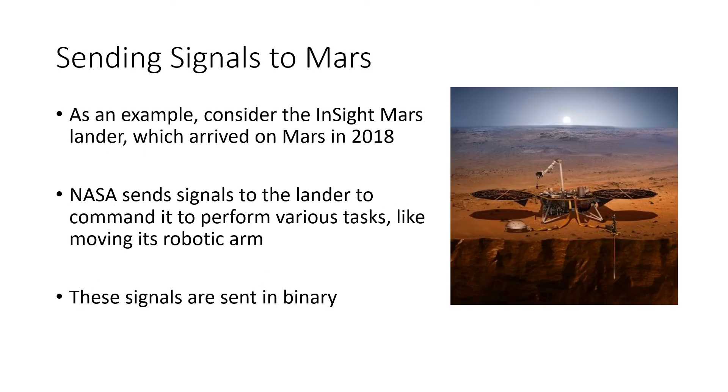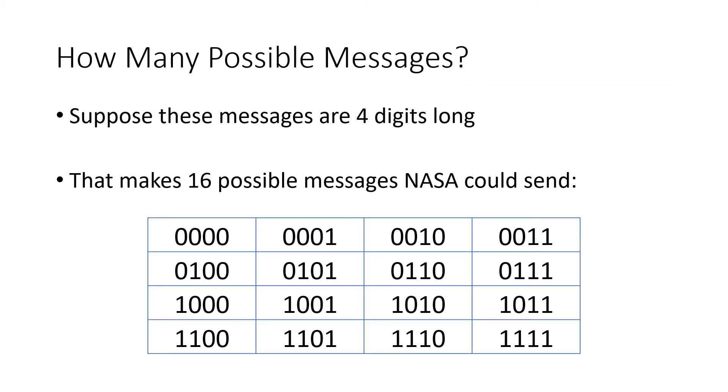Let's look at this example. Let's say we've got this Mars lander, the InSight Mars lander, which landed in 2018. And we're NASA, and we're trying to send signals to the Mars lander to get it to do various tasks. So we might want it to move its robotic arm, for example. Well, these signals are sent in binary. How many messages could we possibly send? Well, it depends on the length of the message. Let's say that the different commands that we send to the lander are each four digits long.